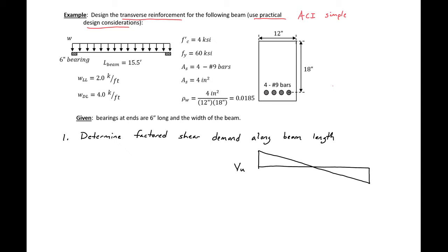We'll assume that we first completed the flexural design, so we found that for our 15.5-foot beam we needed four number nine bars to hold the given loading for flexure. The dead load includes self-weight, so we don't need to add anything beyond the four kip per foot dead load given. We have bearing pads at the ends, so our span length is center-to-center of the bearing pads — 15.5 feet minus one six-inch bearing pad length gives us an L-span of 15 feet.